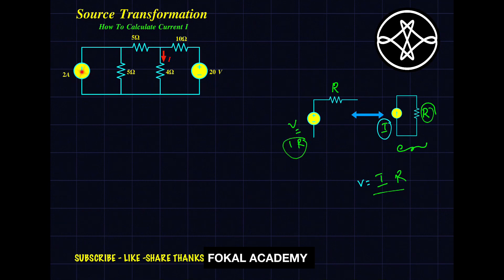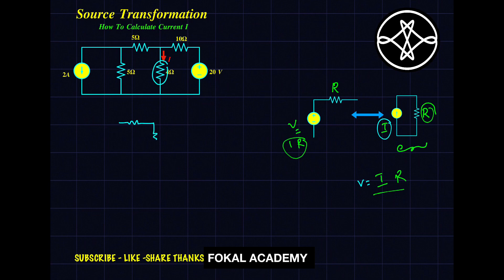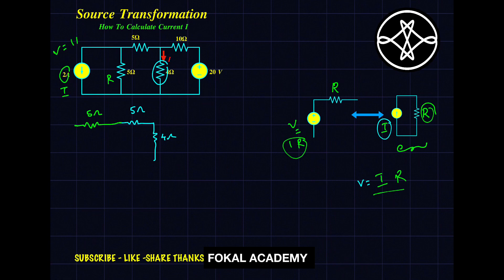Now coming to the problem. The current source is in parallel with a resistor, and the voltage source is in series with a resistor. I am going to convert the current source to voltage and the voltage source to current. Keep the 5 ohm and 4 ohm resistors as they are. On the left side, the current source is in parallel with a resistor, so convert it into a voltage source. The voltage equals I × R = 2 × 5 = 10 volts.